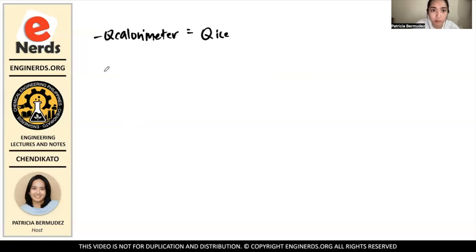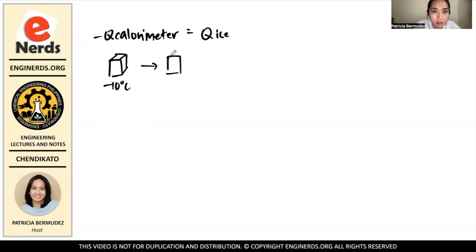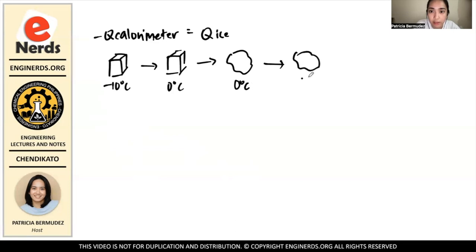To account for that, we list down the stages that the ice undergoes. First, it's ice at negative 10 degrees Celsius. Then it is ice at its melting point, 0 degrees Celsius. After that it melts — since there is a change in phase, there is no change in temperature, so it remains at 0. Then it will reach the final temperature as water, which is T2 — the same T2 as the final temperature of the calorimeter.